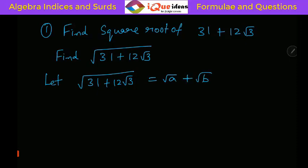31 + 12√3 is an irrational number because of the presence of √3, so its square root will also be irrational. Let us assume both parts are irrational: √a + √b. Now, if there is a plus sign, take √a + √b. If it were minus — for example, 31 - 12√3 — you should take √a - √b. Here it is plus, so we take √a + √b. Now square both sides.